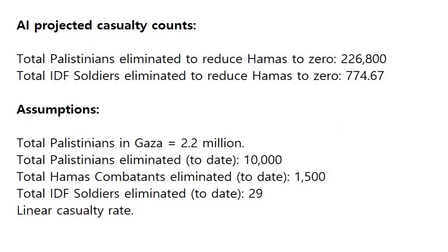Now we have a few assumptions before presenting the AI projections. We're assuming about 2.2 million Palestinians in the Gaza Strip. To date, approximately 10,000 Palestinians have died so far. According to the latest mainstream media numbers, about 1,500 Hamas combatants have been eliminated and about 29 IDF soldiers. This is considered a linear casualty rate — if we calculate and project the same casualty rate forward, we come up with our casualty counts.